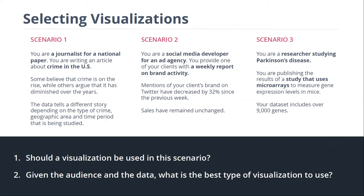Given the audience and data, what's the best type of visualization for scenario one? A line graph is a great idea because we're looking at changes over time, and line graphs are a classic way to show that. A scatter plot could also be helpful, especially if we're comparing two different variables to see if there's a relationship between them. We also have geographic information, so a map could be very engaging here. There are a lot of options for scenario one.